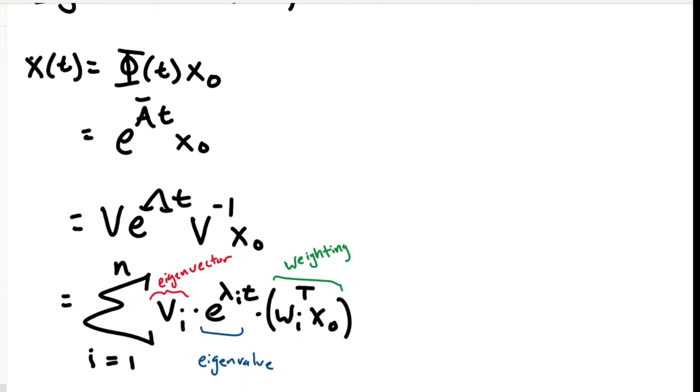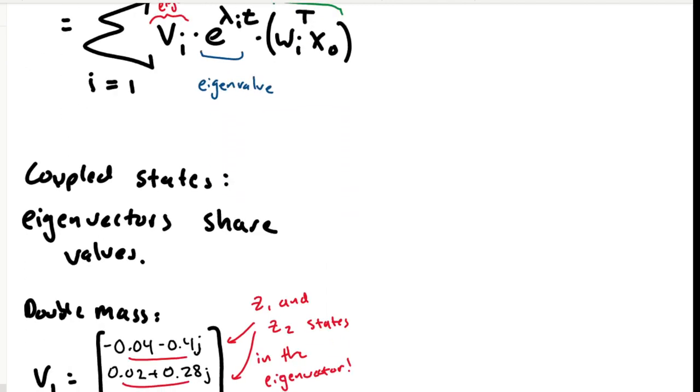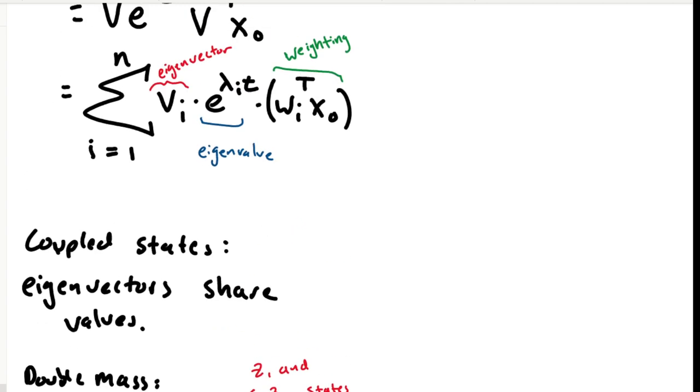This exponential can be written using the eigenvector decomposition as V times the exponential of the eigenvalues times V inverse times the initial conditions. Another way to write this would be as a summation. Sum from i equals 1 to n of V times the i-th eigenvalue times the i-th eigenvalue times a weighting, which here is determined by the i-th row of the inverse of the eigenvector matrix times the initial conditions.